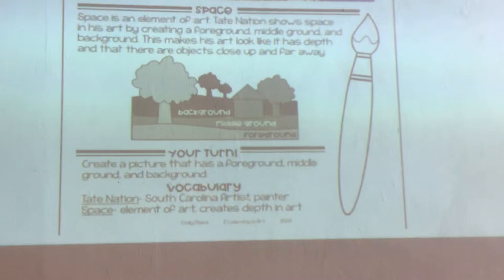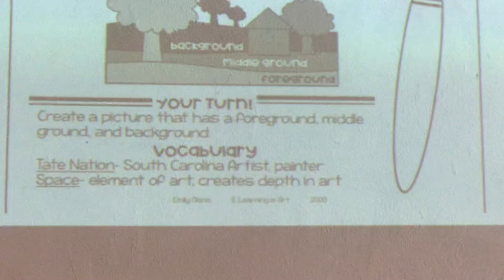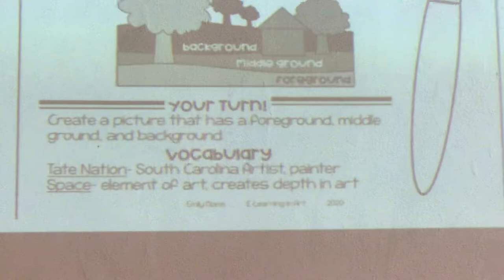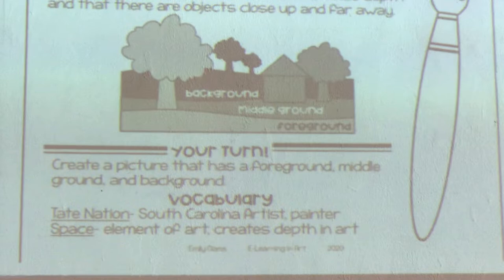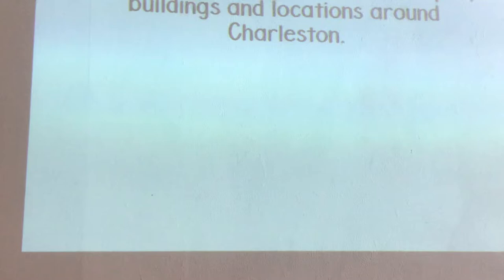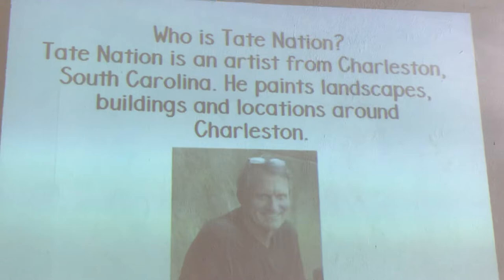Okay, your turn. This is what you're going to be doing. You're going to create a picture that has a foreground, a middle ground, and a background. We do have a little bit of vocabulary. The vocabulary is Tate Nation — he's a South Carolina artist and painter — and space, which is an element of art that creates depth in art.